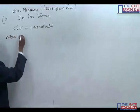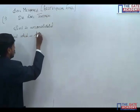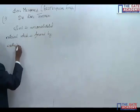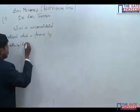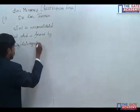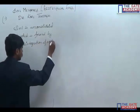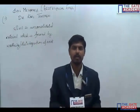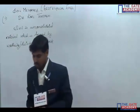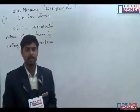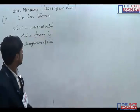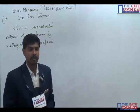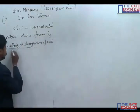Soil is an unconsolidated material which is found by weathering or disintegration of rocks. Soil is also formed by decomposition of some organic material or organic matter. Unconsolidated means it is loose material. You know the meaning of weathering and disintegration.